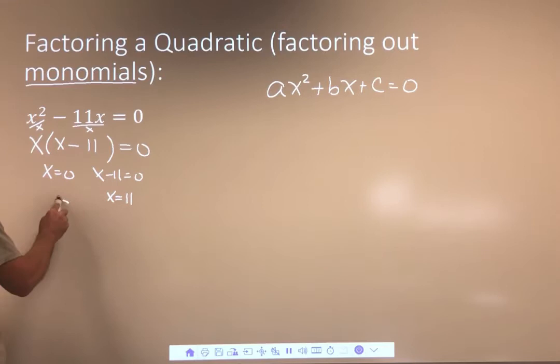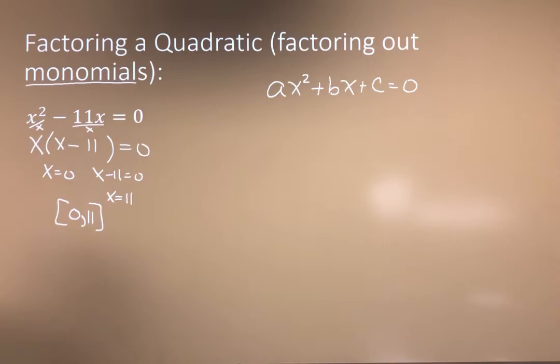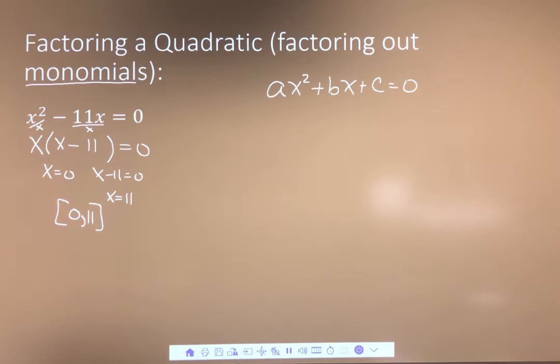Another way of writing the answer would be using brackets. These brackets are just indicative that this is the answer to the problem — it is not a coordinate. If you use parentheses, you'd be almost indicating we're dealing with a coordinate. The answers are zero and 11, because we were able to factor out an x. Two terms — that's what we want to look for first.